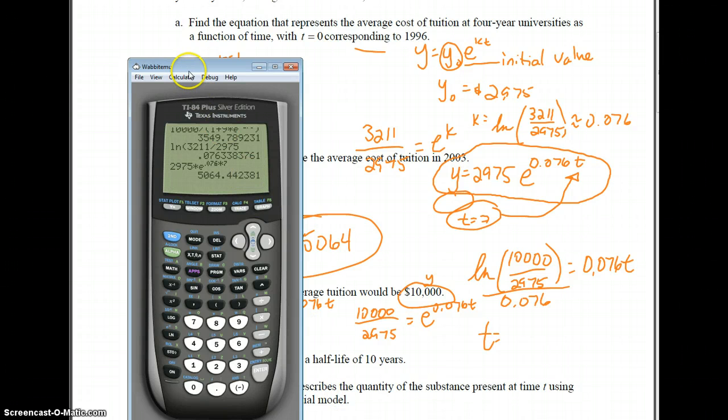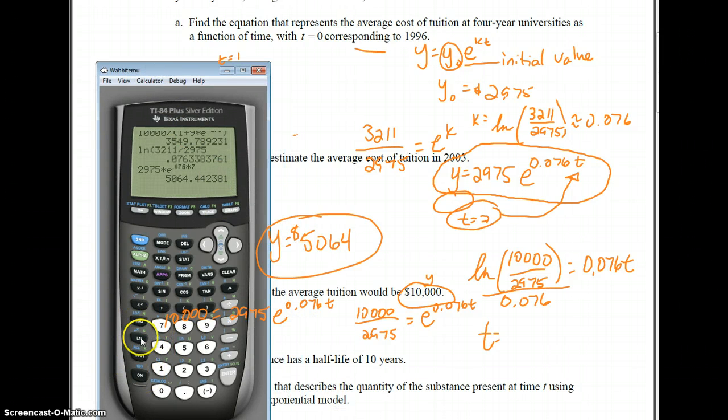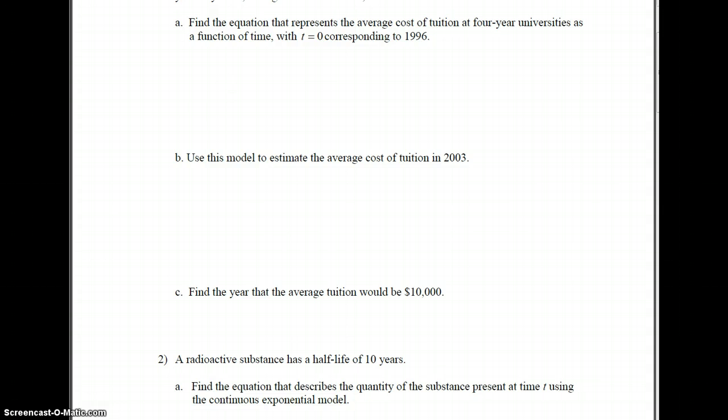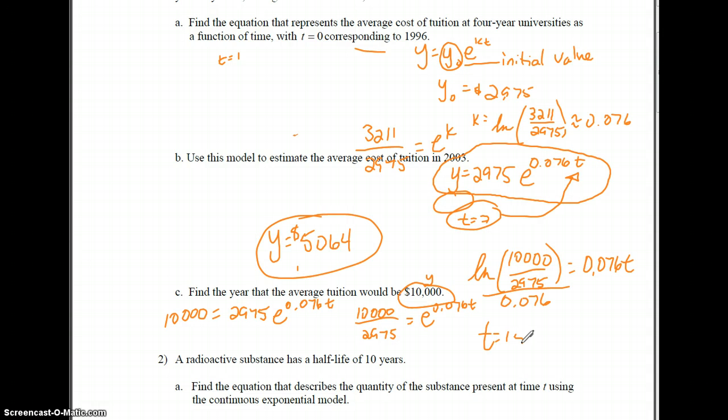I'm going to enter that in my calculator and see what I get. ln of 10,000 divided by 2,975, and we're going to divide that by 0.076, and we're going to get 15.95. So 15.95 is the years. Now that's about 16, so about 16 years later, 16 years after 1996 is 2012.